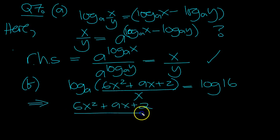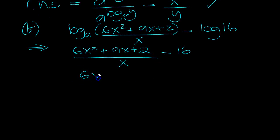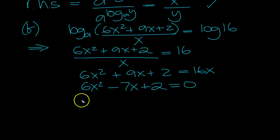6x squared plus 9x plus 2 over x is equal to 16. And that then tells us 6x squared plus 9x plus 2 equals 16x. Move the x up to 16x. 6x squared minus 7x plus 2.